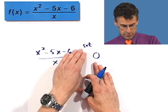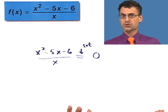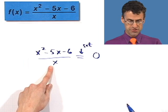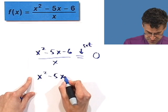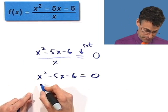...all you've got to do is take a look at where the numerator, the top, equals zero, solve that, and make sure that none of those solutions make the bottom equal to zero. So here we go. Let's just set the top equal to zero. x squared minus 5x minus 6 equals zero. I'm hoping it's going to factor.